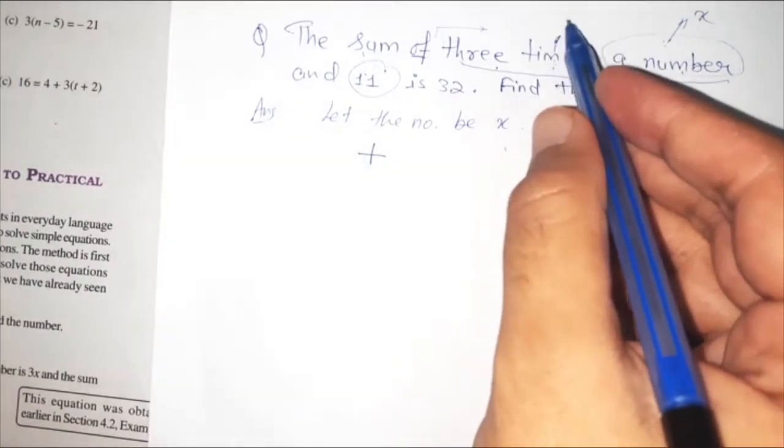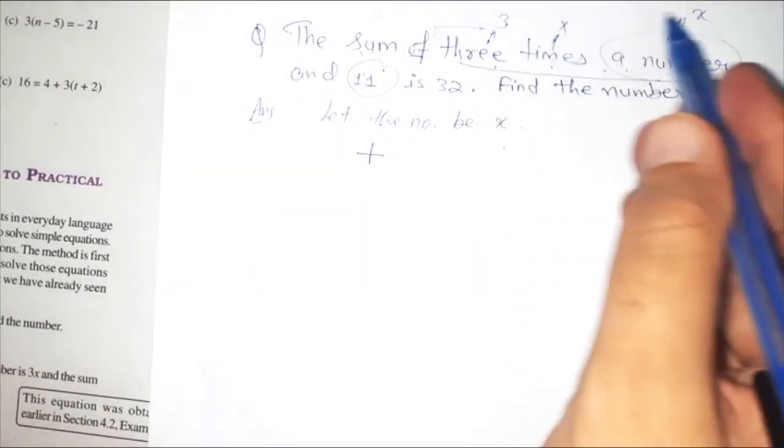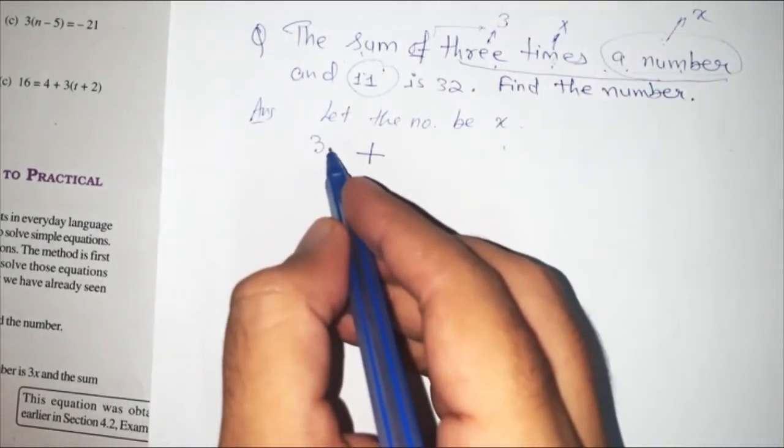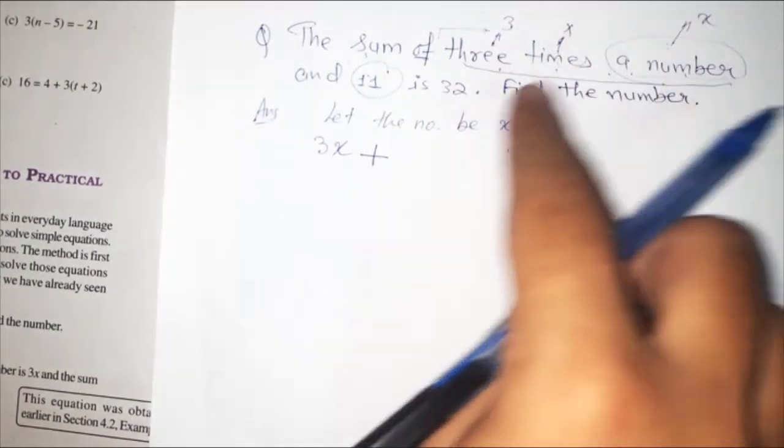Times means multiplication. 3 obviously means 3. 3 multiply x. 3 multiply x is what? 3x. We should know this. 3 multiply x is 3x.